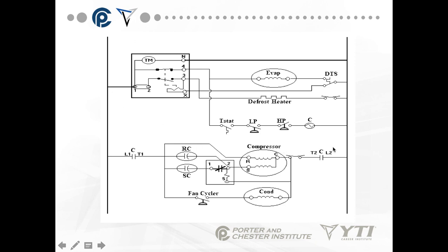This is a commercial diagram with an electric defrost heater, and we have a defrost limit here. Whenever I have an electric defrost heater, I have to have a limit switch. Fan cycling occurs in a low ambient control, so this is called a low ambient control.